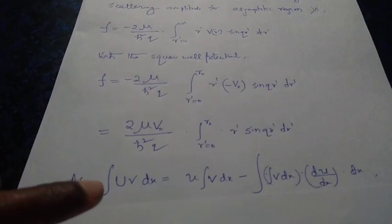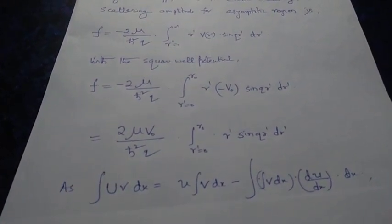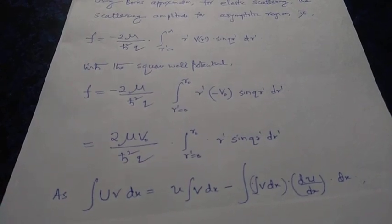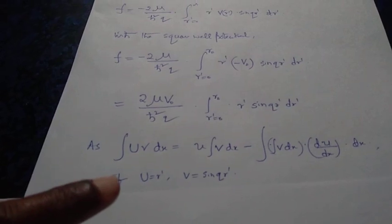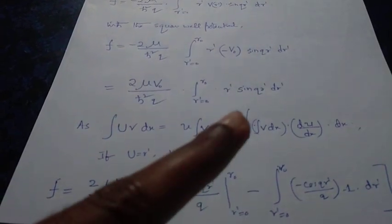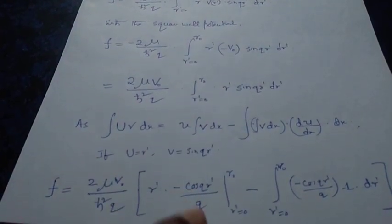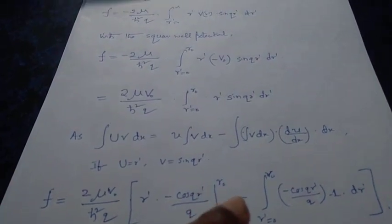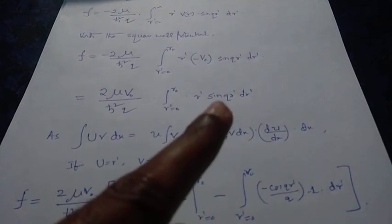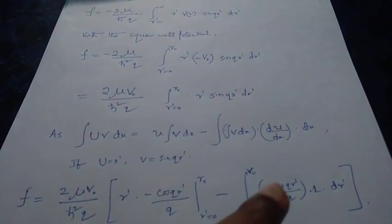We use the integration by parts method: integral of u·v dx equals u times integral of v dx minus the integral of (derivative of u times integral of v dx) dx. Taking r' as u and sin(Qr') as v, the integration gives r' times (minus cos(Qr')/Q) evaluated from 0 to r-naught, minus the integral from 0 to r-naught of minus cos(Qr')/Q times 1 dr'.